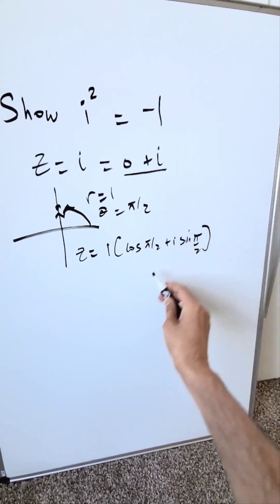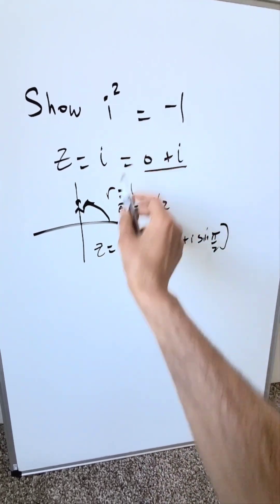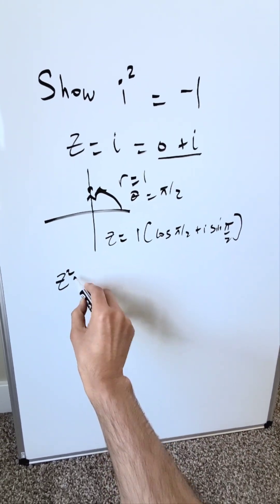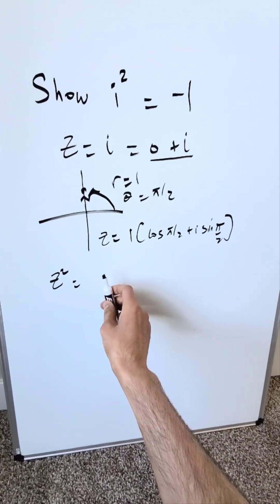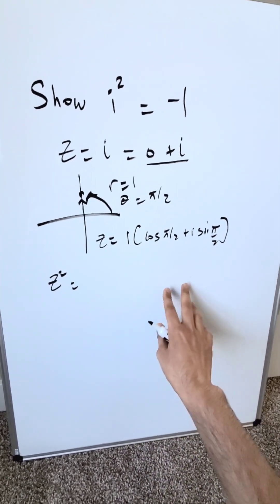But look, our interest here is to find i squared. Let that i squared be equal to z squared, a certain complex number squared. You're looking here now at De Moivre's theorem formula coming through.